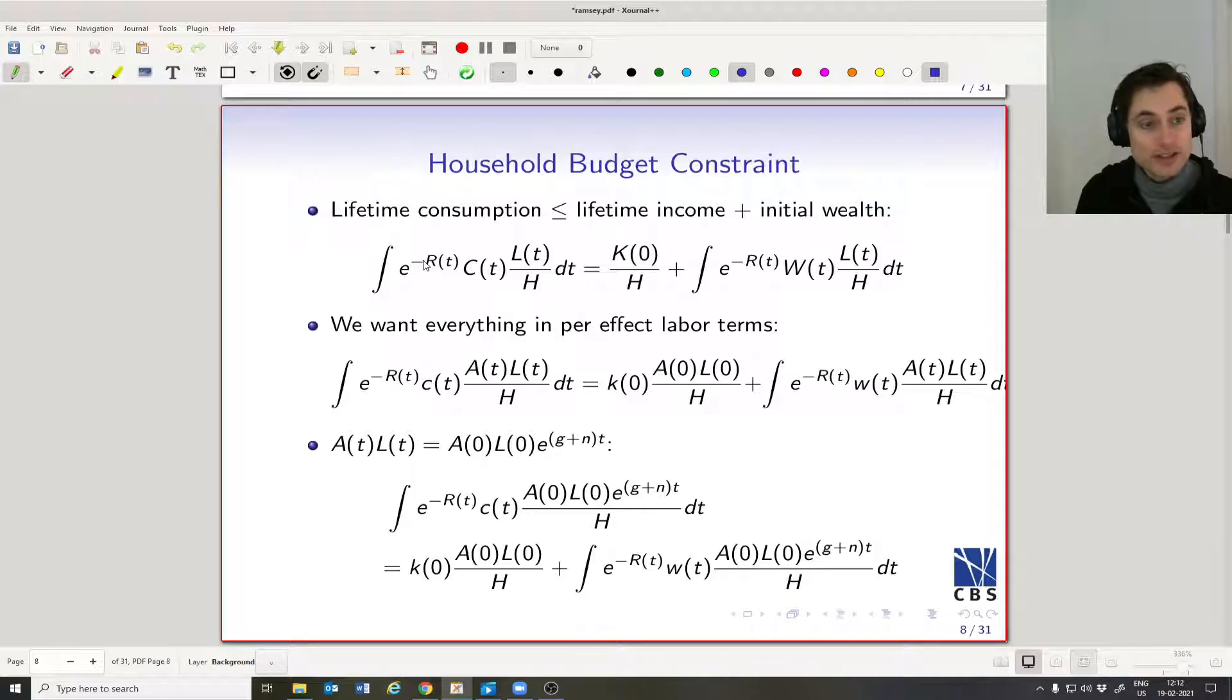What matters here is the interest rate, not the discount rate. This is not the subjective discount rate; that's in the utility function. This here is, we're thinking about borrowing and saving, so we need to be thinking about the interest rate.